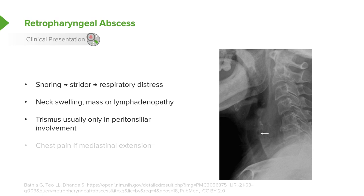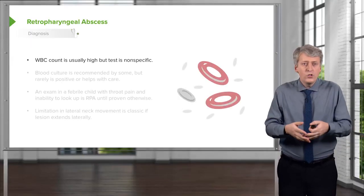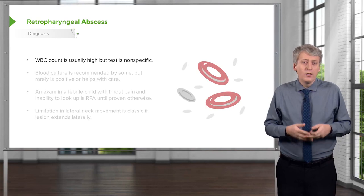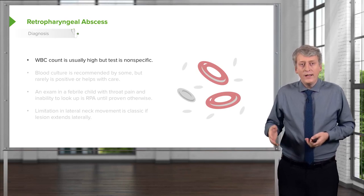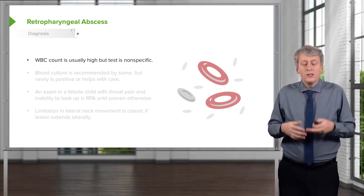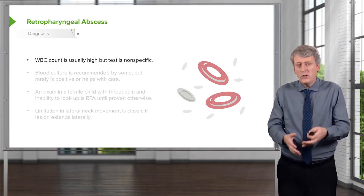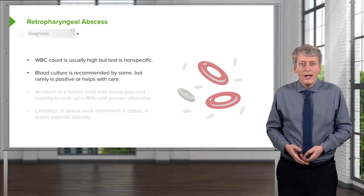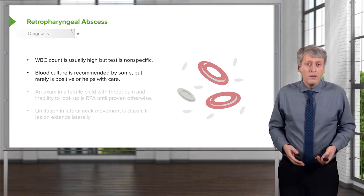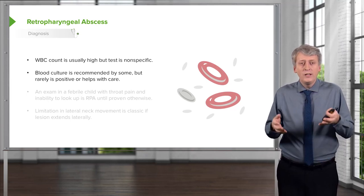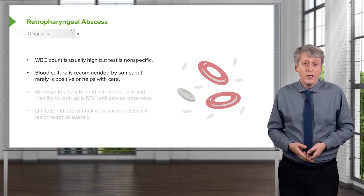Patients will have trismus only with peritonsillar involvement — they typically do not in retropharyngeal involvement. Very rarely, this can extend downward and they can develop chest pain. When you check labs, they're generally unhelpful. A white count is usually high but can be completely normal, so we shouldn't rely on it. Blood culture is virtually never helpful, so I do not recommend it.